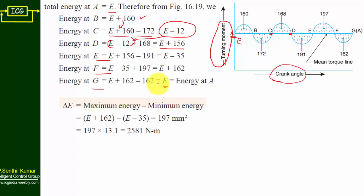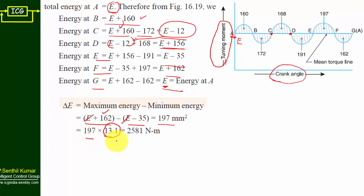Now we find ΔE: maximum energy minus minimum energy. Looking at all values, the maximum is E + 162 and the minimum is E − 35. Subtracting both, the E terms cancel, giving 197 mm². Since 1 mm² = 13.1 Newton-meter, multiplying 197 × 13.1 gives ΔE = 2581 Newton-meter — the fluctuation of energy for this flywheel.